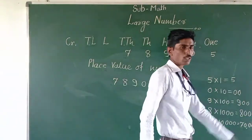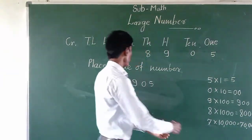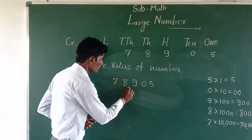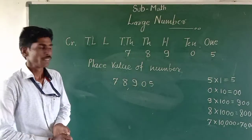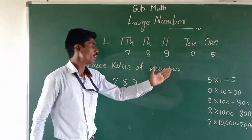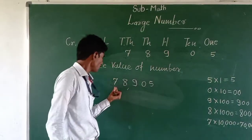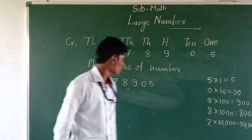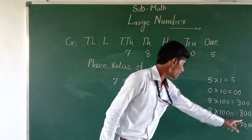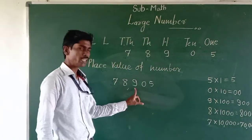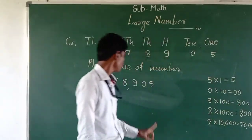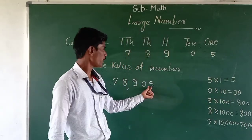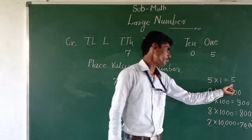So the place values of 78,905 are: 7 → 70,000; 8 → 8,000; 9 → 900; 0 → 0; and 5 → 5.